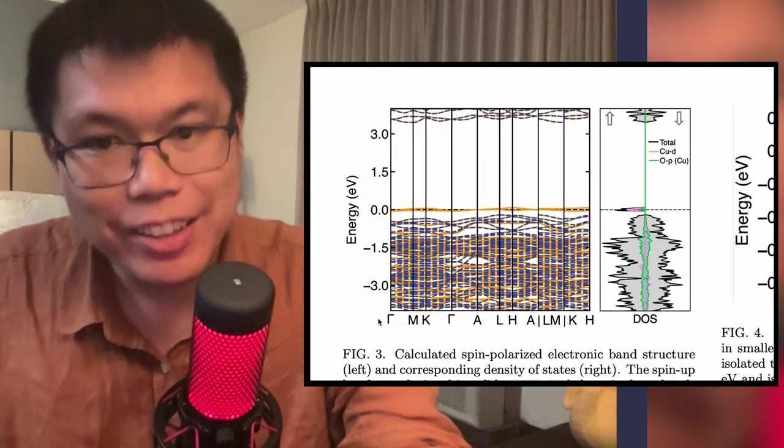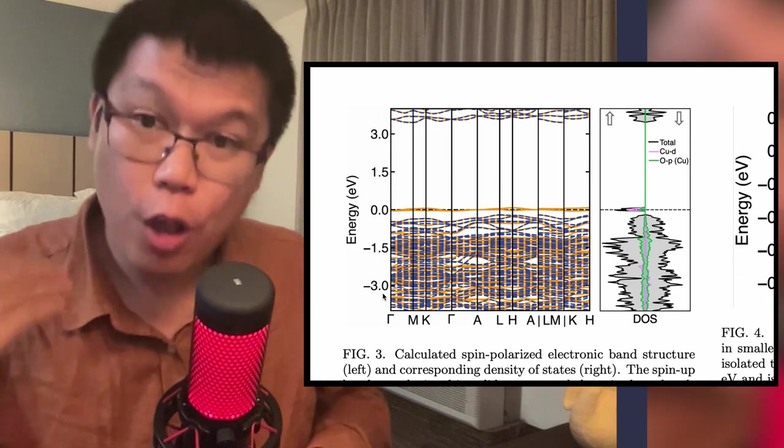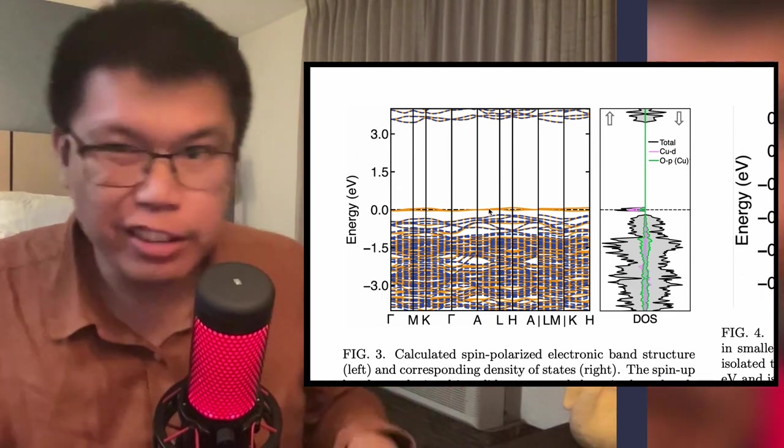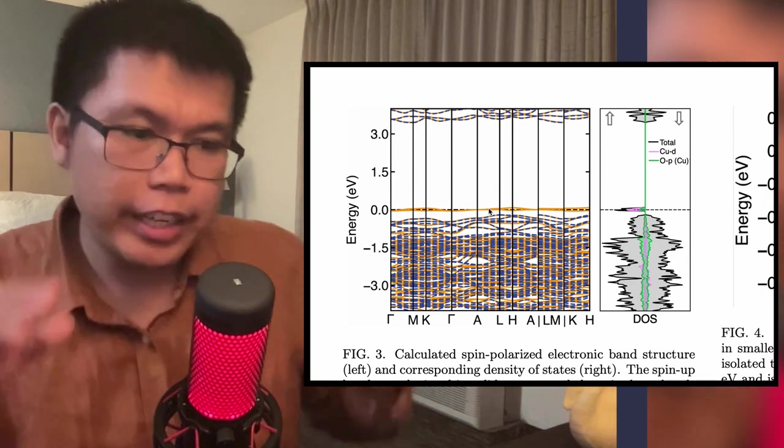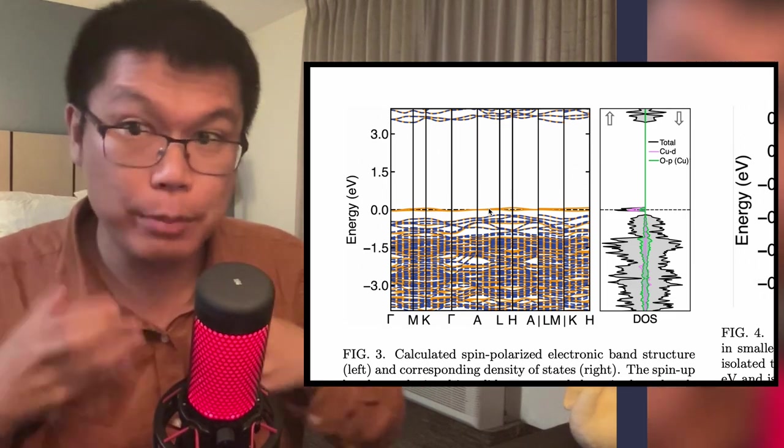But how do we read this? Basically, on the vertical axis, we have a measurement of the energy of electrons relative to this zero level. This zero level is basically where the electrons are if nothing moves. If the material is perfectly still and nothing moves, which happens when it's super cold.